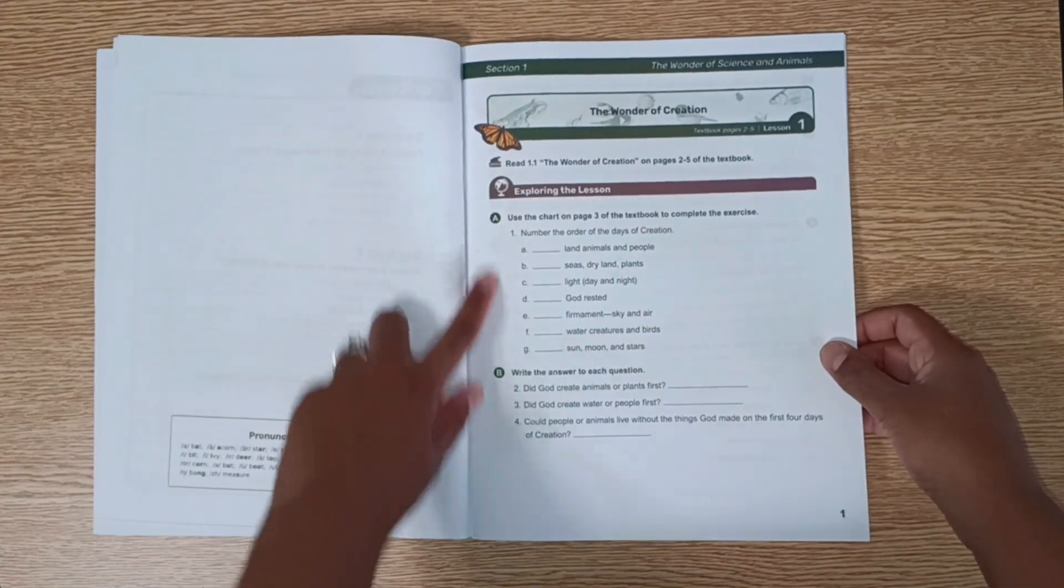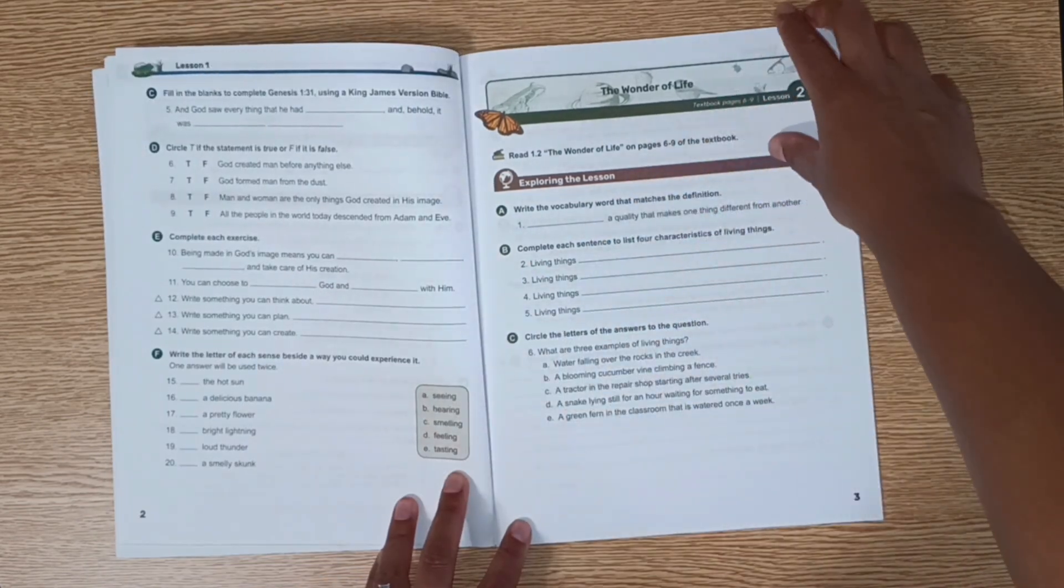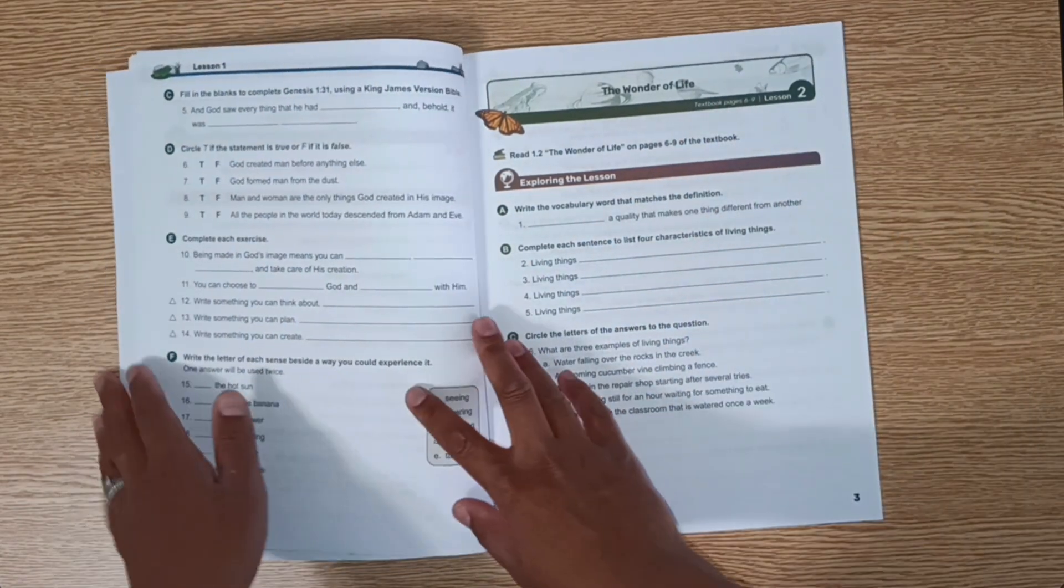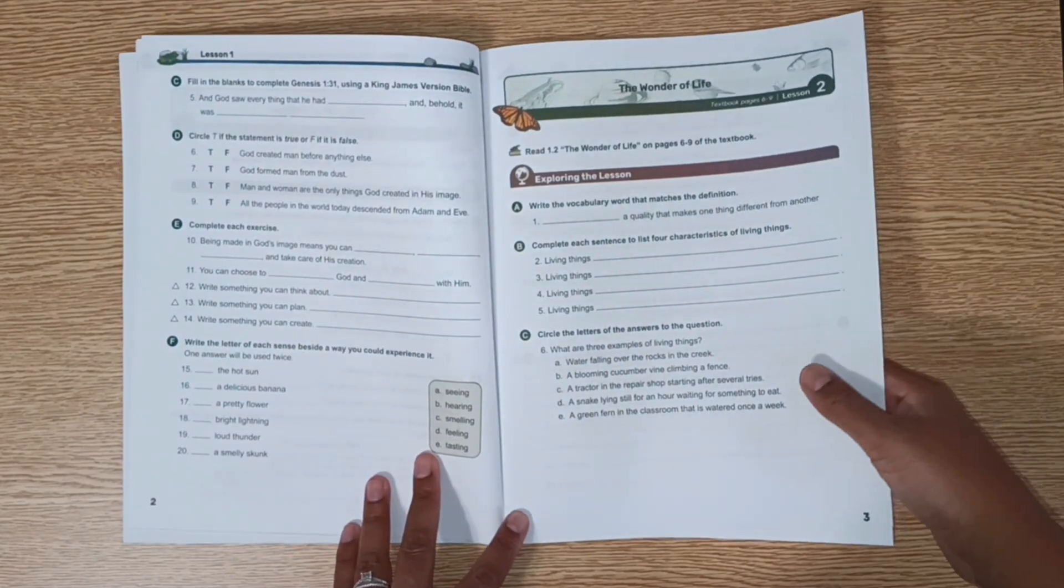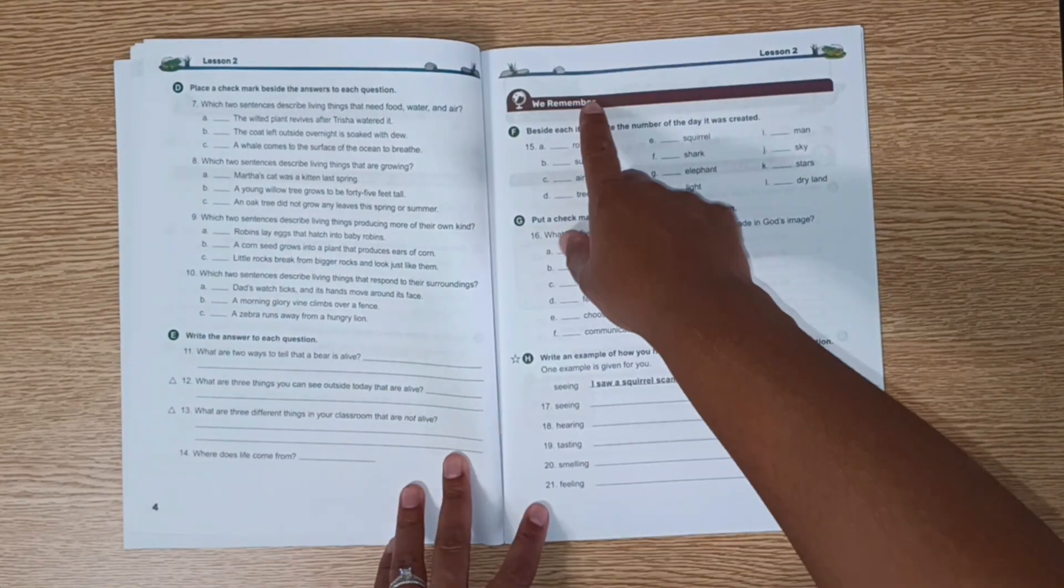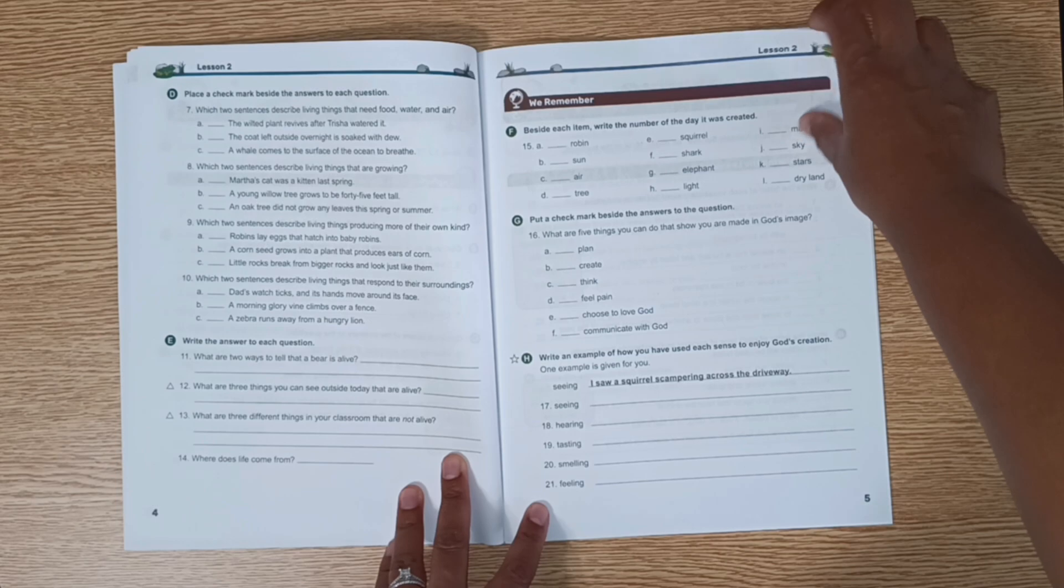So there will be an exploring the lesson. So this first lesson was only the front and back of one page. The next lesson, the wonder of life, now they're starting to have a We Remember, the review.